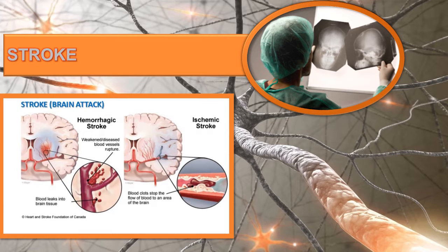Hemorrhagic strokes involve bleeding within or around the brain tissue, as illustrated in the picture. The patient may have several diagnostic tests. The history of the stroke's onset is important — ischemic strokes often occur during sleep, whereas hemorrhagic strokes tend to occur during activity. For a patient having an ischemic stroke, the standard of practice is to start two large-bore IVs with non-dextrose isotonic saline. The immediate primary role for the nurse is to manage the patient receiving treatment and continuously assess for increasing intracranial pressure.